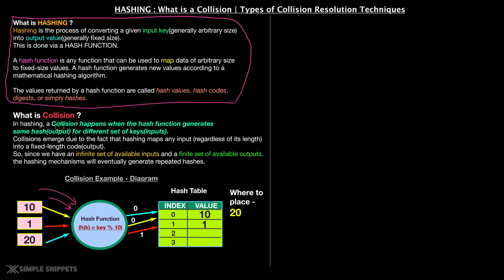Once again, let me repeat, a collision happens when hash function generates same hash, that is same output, for different set of keys, that is different set of inputs. If you guys are noting down for theory purposes, you can take a screenshot of this screen or note down these points if you're writing or preparing answers for your exams.